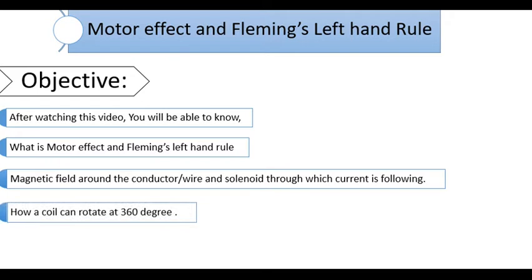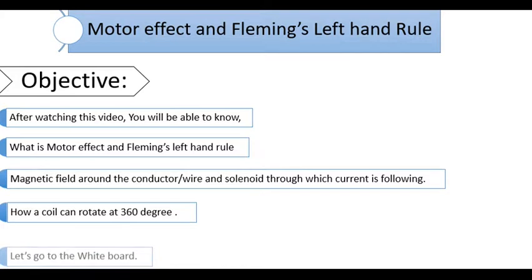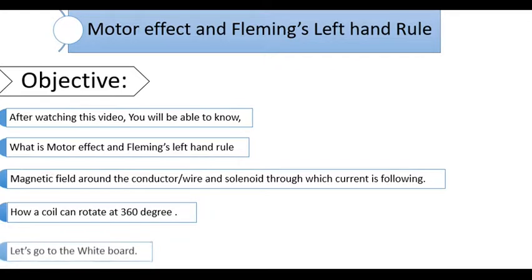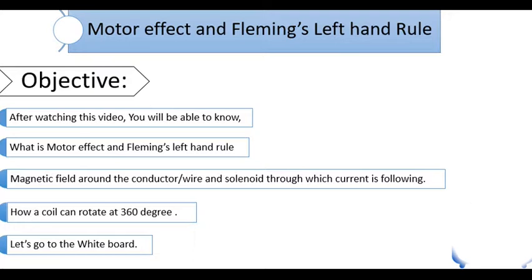After watching this video completely, you will be able to know what is the motor effect, what is Fleming's left-hand rule, how we can find the North and South Pole using this rule, what are the two types of right-hand rule, how we can find the magnetic lines of force around a current-carrying conductor, how we can find the North and South Pole around an electromagnet formed with a solenoid. I will explain all these using a whiteboard and animated video, and also give you some practice with a simulated activity.